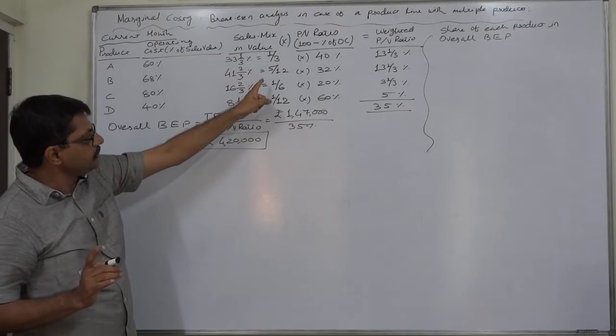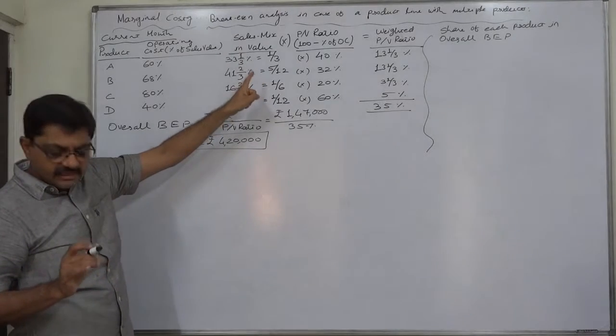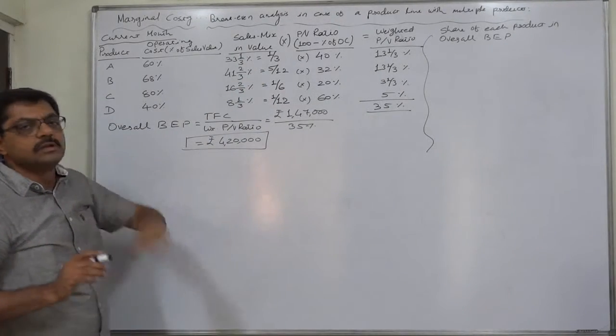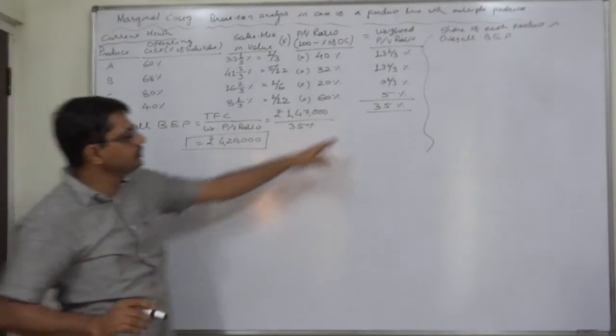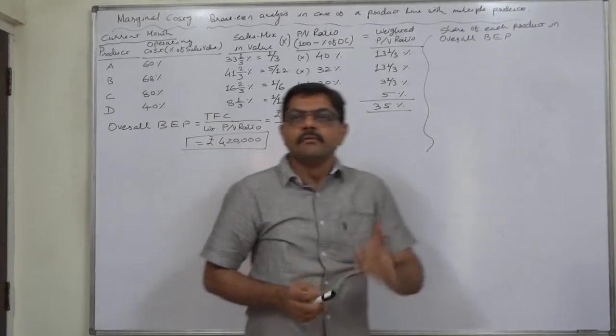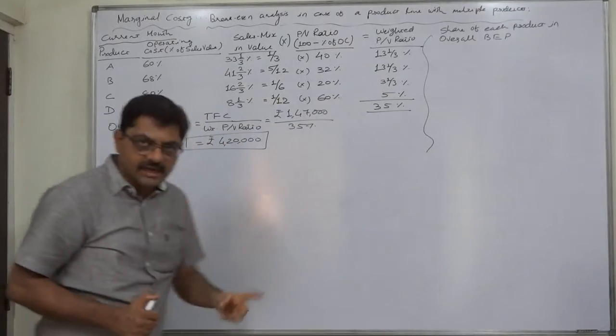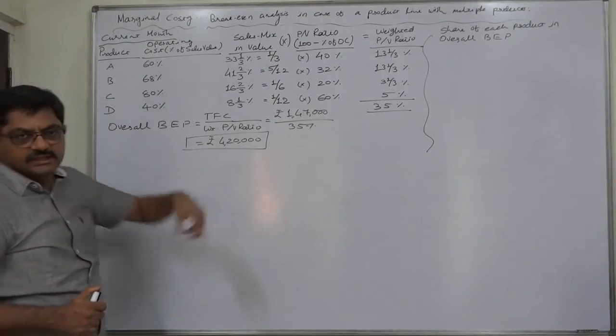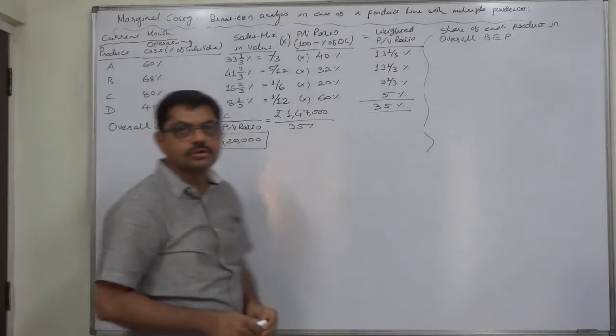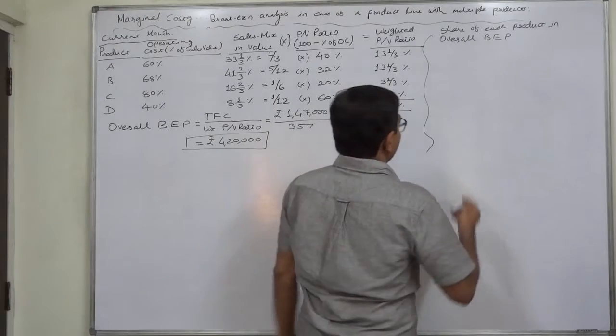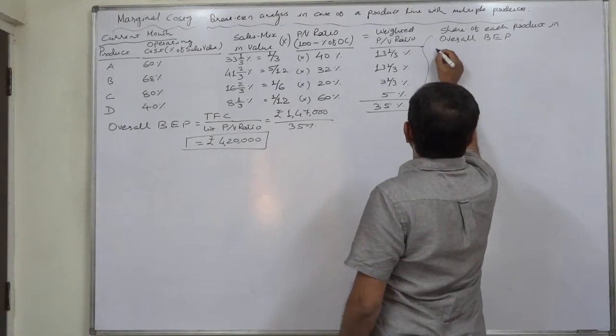Only if, if this proportion, if there is any change in this proportion, the overall BEP will change because the overall weighted PV ratio will change, even if there is no change in selling price or variable cost of the company or of the products rather.